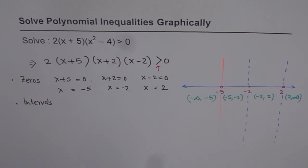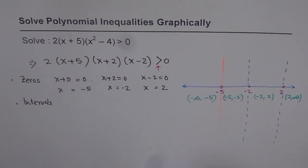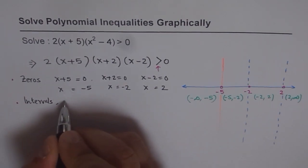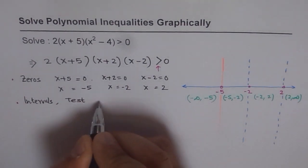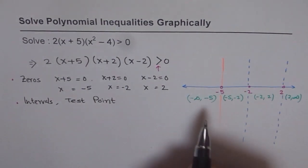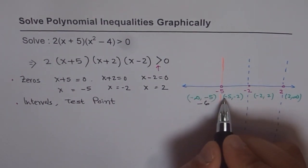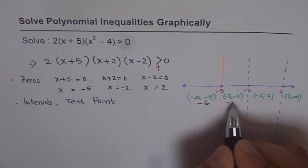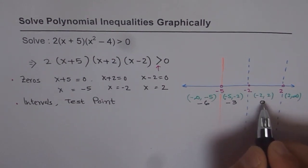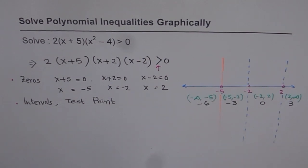Now, in these intervals, you need to take a test point. So let's take intervals and then let's have a test point in each interval. So the test points in these intervals could be, let us say, minus 6 here. And between minus 5 and minus 2, we can take minus 3. Between minus 2 and 2, 0 is a good point. And between 2 to infinity, let's take 3. So we have set of these test points which will test our function. We just have these test points for the time being.